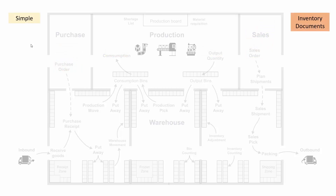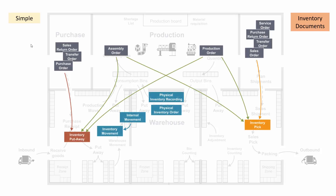Moving on to the simple functionality, meaning if you have a checkmark in put away and pick on the location card, and in bin — meaning you work with bins in the warehouse and simple put away and pick functionality. Those documents on the outbound side would be an inventory pick, on the inbound side an inventory put away, and internally you have the inventory movement created from an internal movement document, and the physical inventory recording created from physical inventory order documents. Those are for counting, whereas the movements are for moving. These documents apply when you have the checkmark in bin mandatory and put away required and pick required on the location card.